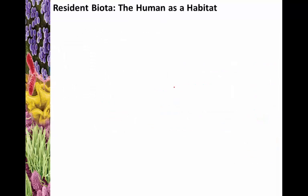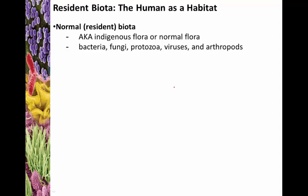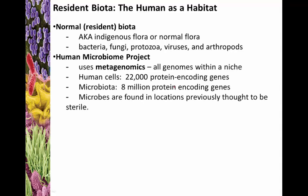Now we'll talk about resident biota, also called normal microflora or indigenous flora. This can include types of bacteria, fungi, protozoans, viruses, and arthropods — it depends on where you live and what is normal for certain individuals in certain situations or areas.